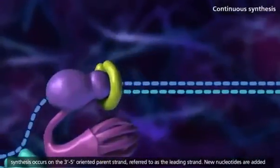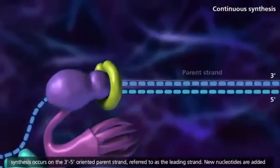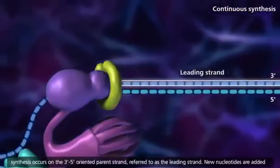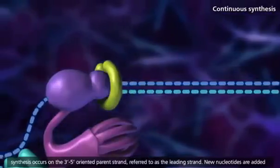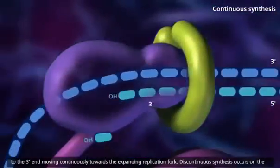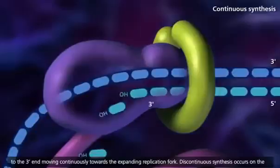Continuous synthesis occurs on the 3' to 5' oriented parent strand, referred to as the leading strand. New nucleotides are added to the 3' end, moving continuously toward the expanding replication fork.